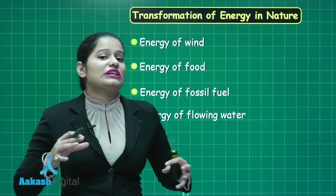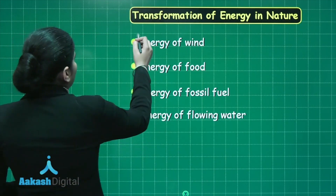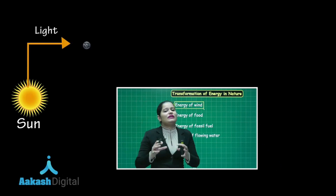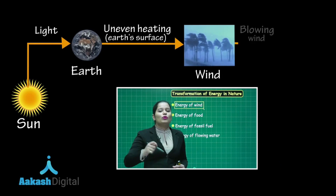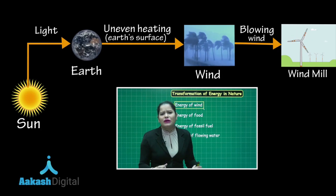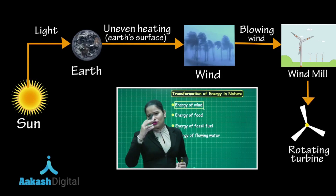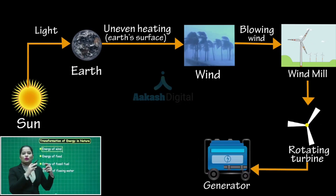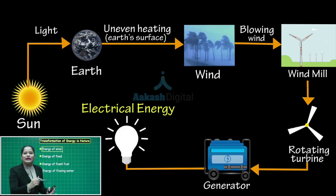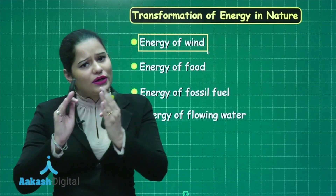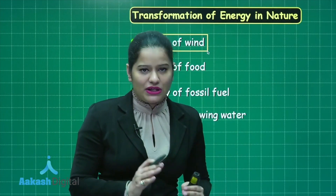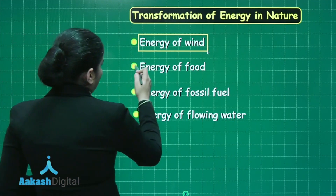Let's start with the energy of wind. Wind blows because of the uneven heating of the Earth's surface by the sun, and that blowing wind has kinetic energy. That kinetic energy of wind is utilized in wind energy farms to rotate the blades of windmills. The rotation of the windmill blades drives the shaft of a generator to produce electricity. So here you have seen how solar energy changes into wind energy, and that wind energy is utilized in generating electricity.